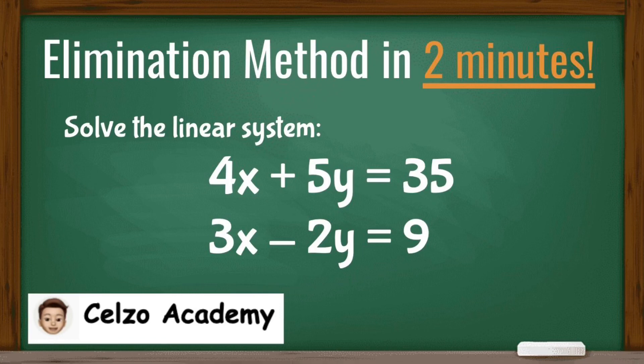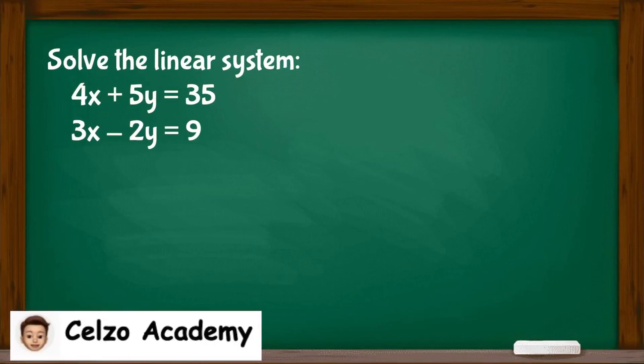To eliminate the variable x, we need to make the coefficients for both equations the same. To do that, we need to multiply both equations. If I have coefficients 4 and 3, I will multiply this by 3 and I will multiply this by 4.